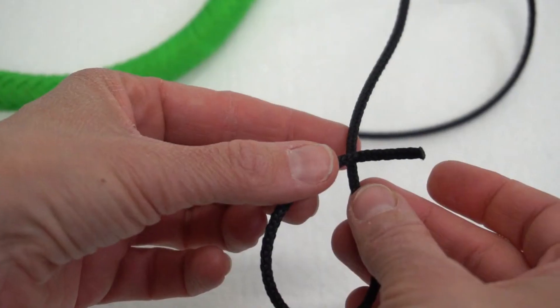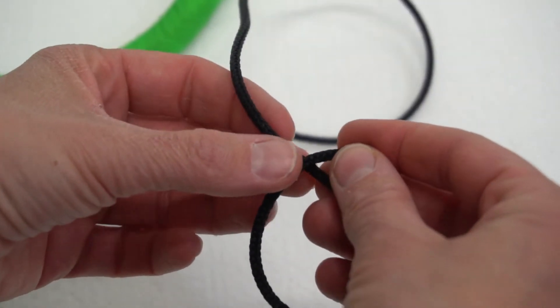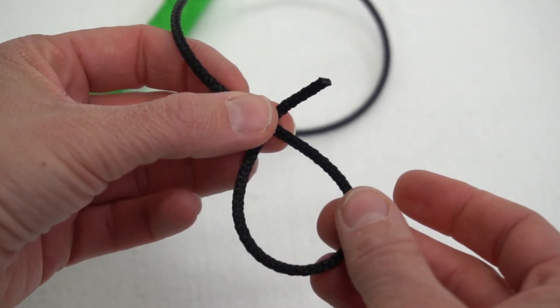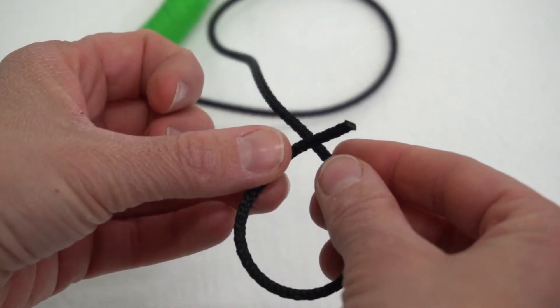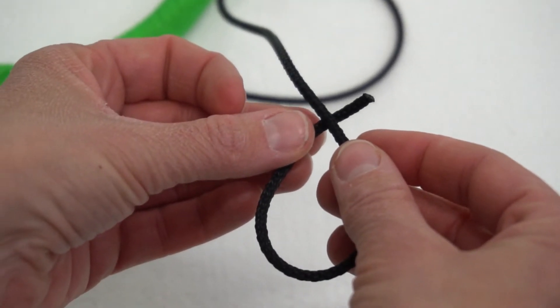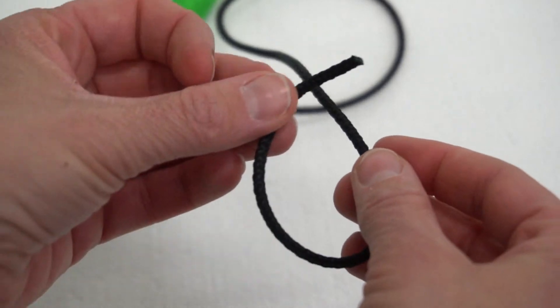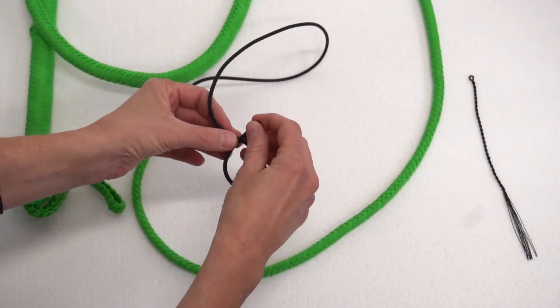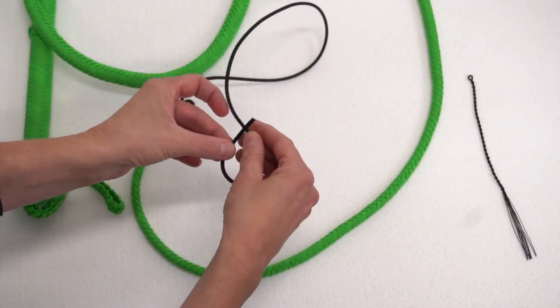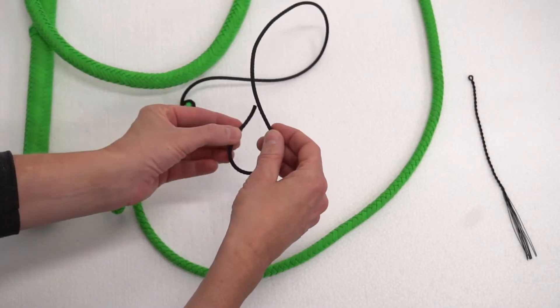by taking the end of the fall and making it into the shape of a number six, crossing it over the working end of the fall. Make sure to cross in front of the working end, not behind it. This will create a number six shape.